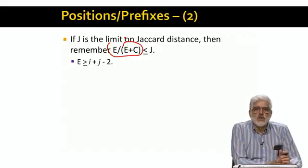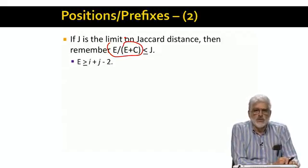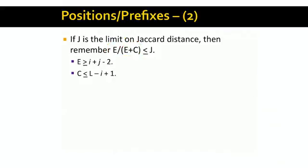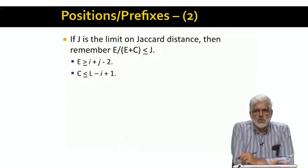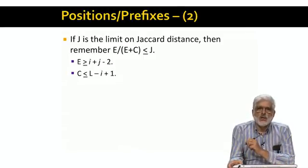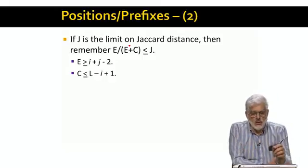From the previous slide, we know that E is at least I plus J minus 2. And C is at most L minus I plus 1, where L is the length of the probe string S. These two inequalities let us get a lower bound on E over E plus C, which using this must be less than or equal to J.